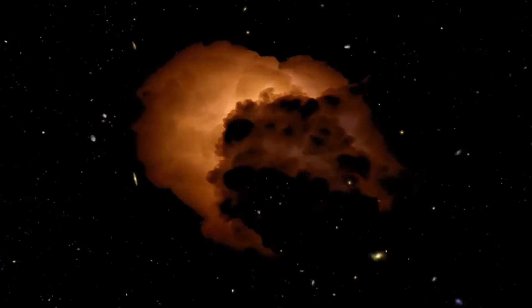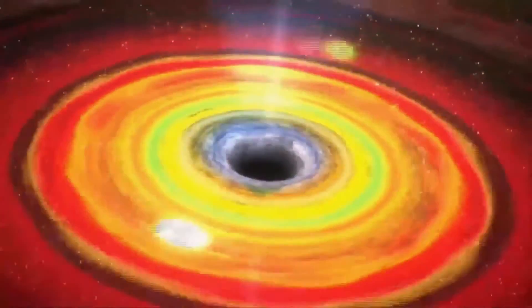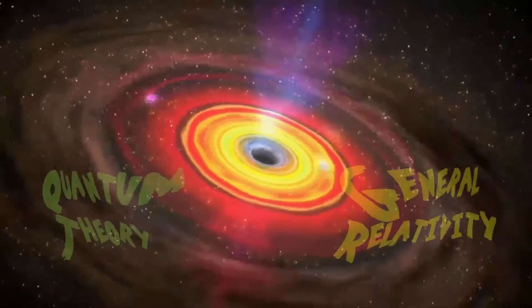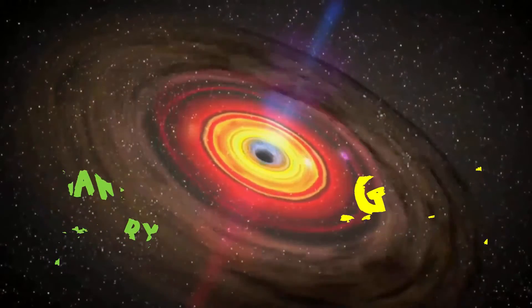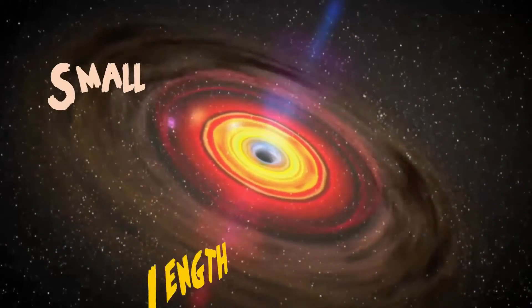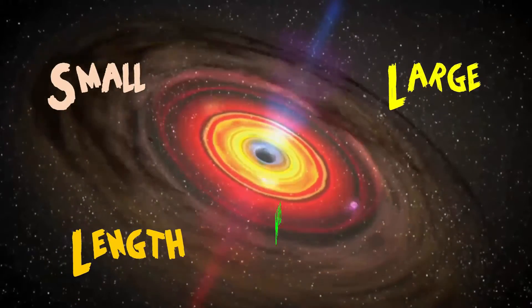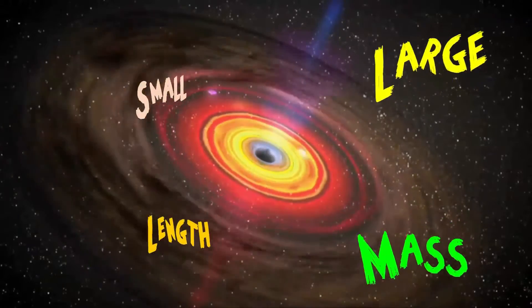And physicists can't just keep on using them because there are some cases in which both theories apply, such as in a black hole. The size of a black hole is small in terms of length, but the size is large in terms of mass. So we need both theories.